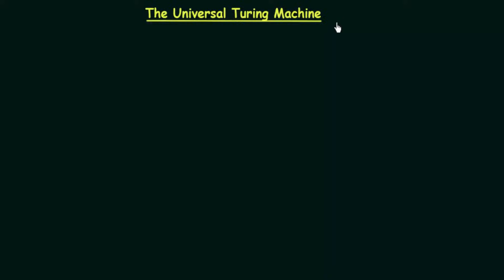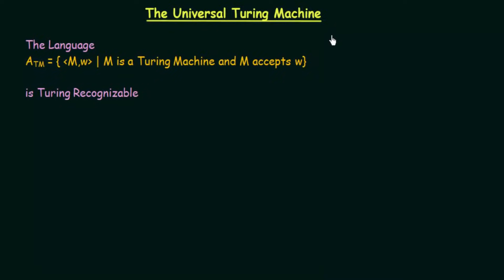In order to understand this, let us take an example of a language that will help us understand the acceptability of a Turing machine. Here we have a language called A_TM, which consists of two elements M and W, where M is a Turing machine and M accepts W. So this language A_TM has two elements where M could be any Turing machine and W is a string which, if we pass into this Turing machine M, will be accepted. If we have a string W which we pass into Turing machine M and it is accepted, then we can say that this whole thing lies in the language A_TM.